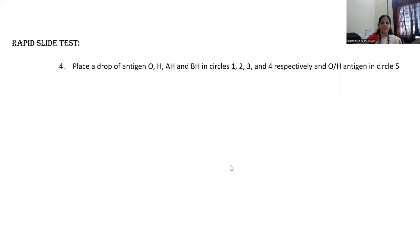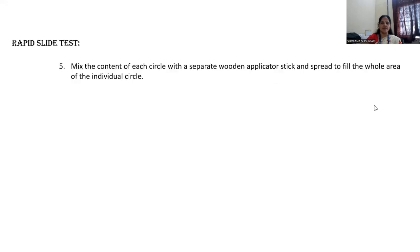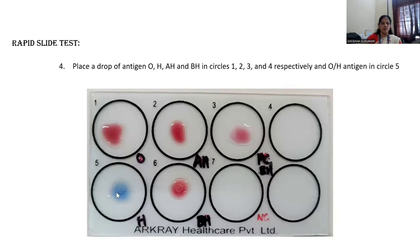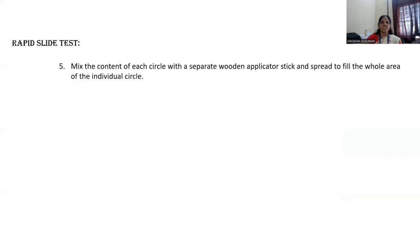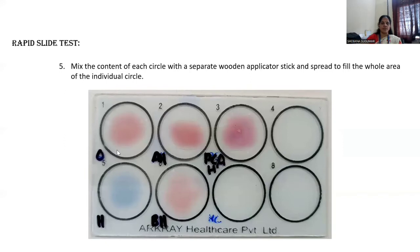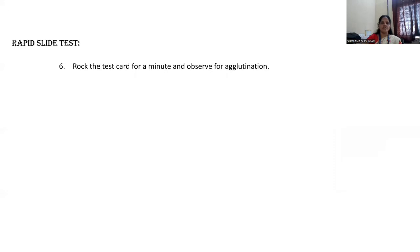Then place a drop of antigen O, H, AH, and BH in circles 1, 2, 3 and 4 respectively. O or H antigen can be placed in circle 5. So here O, H, AH, BH antigens are placed. In this well, positive serum sample is already placed and we can add O antigen or H antigen. Mix the content of each circle with a separate wooden applicator stick and spread to fill the whole area of the individual circle. Spread both the antigen and the serum throughout the circle and wait for a few minutes. Rock the disc for a minute and observe for agglutination.